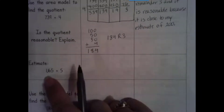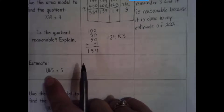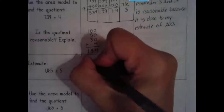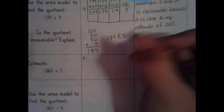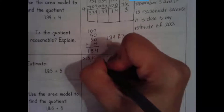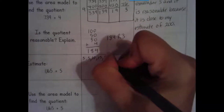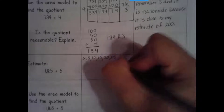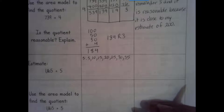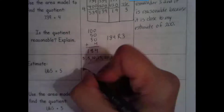For our next problem, we need to estimate again. We look at our divisor and list multiples to find our compatible number. Multiples of 5: 5, 10, 15, 20, 25, 30, 35. If I need more I can list more, but I'll stop there for now.